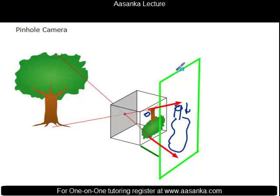Similarly, if you shift the screen a little forward so it comes closer, the image will get shorter — it will be a smaller size. And the energy per unit area will go up, because the same energy is now concentrated in a smaller area where the image is located.